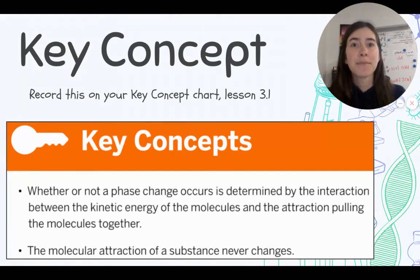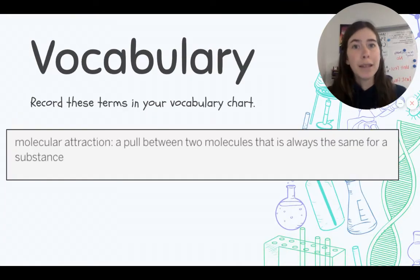Next up, we've got a vocabulary word: molecular attraction. We just used that word a moment ago. Molecular attraction is a pull between two molecules that is always the same for a substance. So just flip your page over, go to your vocabulary chart, and write this word down—molecular attraction. Go ahead and pause the video if you need some time.